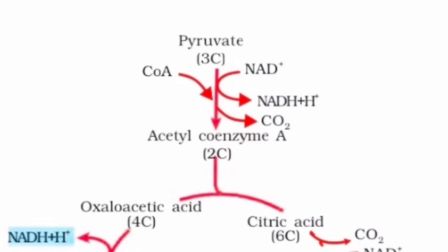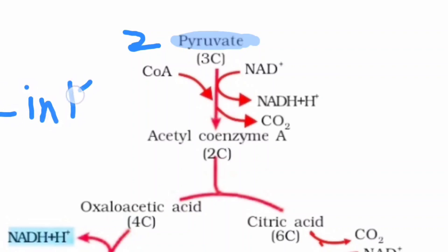Hello everyone. So today we are dealing with the Krebs cycle. We have already discussed glycolysis in the previous lecture and we know that the product of glycolysis is none other than two molecules of pyruvate. Now whenever pyruvate is synthesized, before going into the Krebs cycle it will be dealing with the reaction called the link reaction.